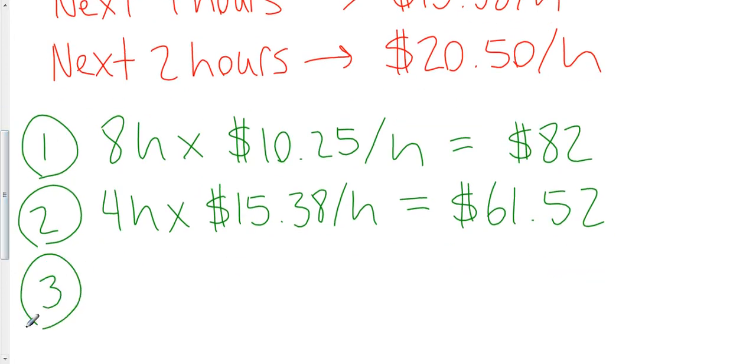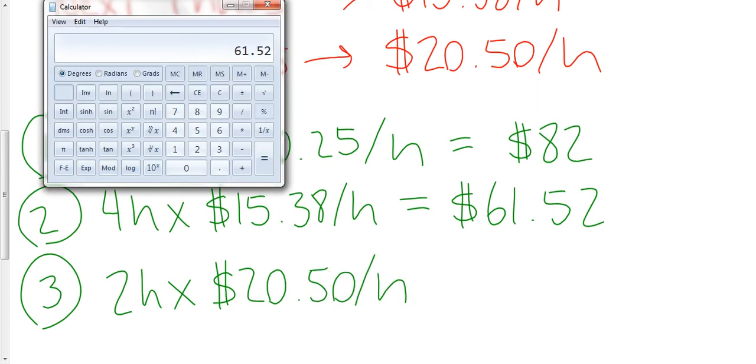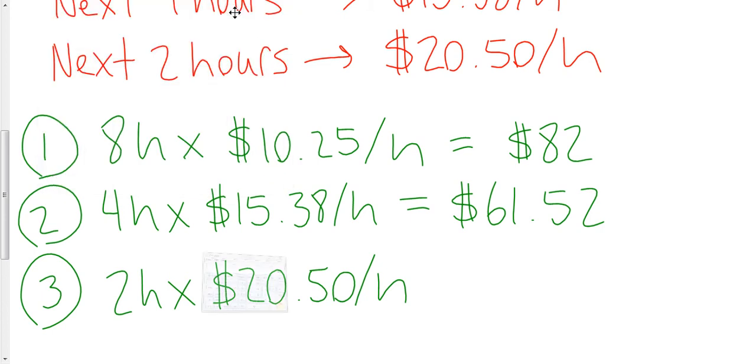And for the last two hours of John's shift, he's earning double time at $20.50 an hour. So two times $20.50 is $41.